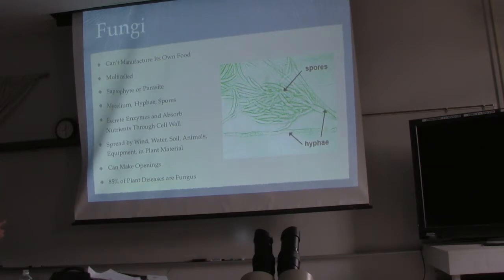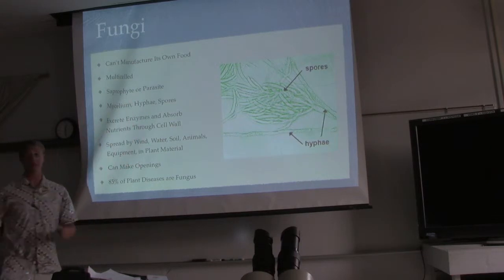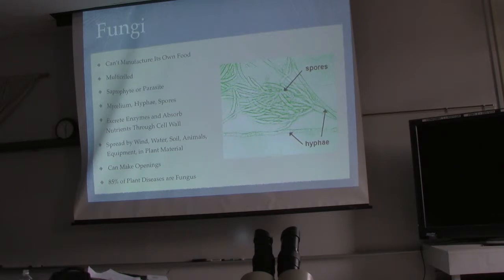Fungi can be saprophytic or parasitic. Saprophytic means it breaks down dead material — things that are no longer living. About 98% of the fungi we find are saprophytes. These are fungi in the environment that wait for the right material, then excrete enzymes to break it down and consume it. They don't react until that specific molecule comes across them.